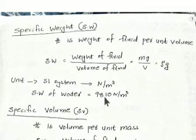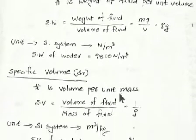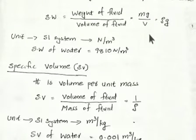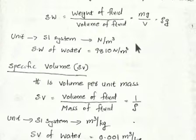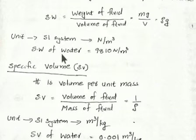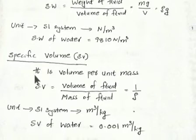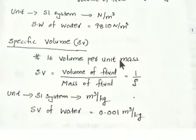The specific weight of water is more generally taken as 9810 Newton per meter cube. Water is slightly compressible, so its density will vary with respect to temperature and pressure. This value is not exact — it will vary. Now, specific volume is volume per unit mass.